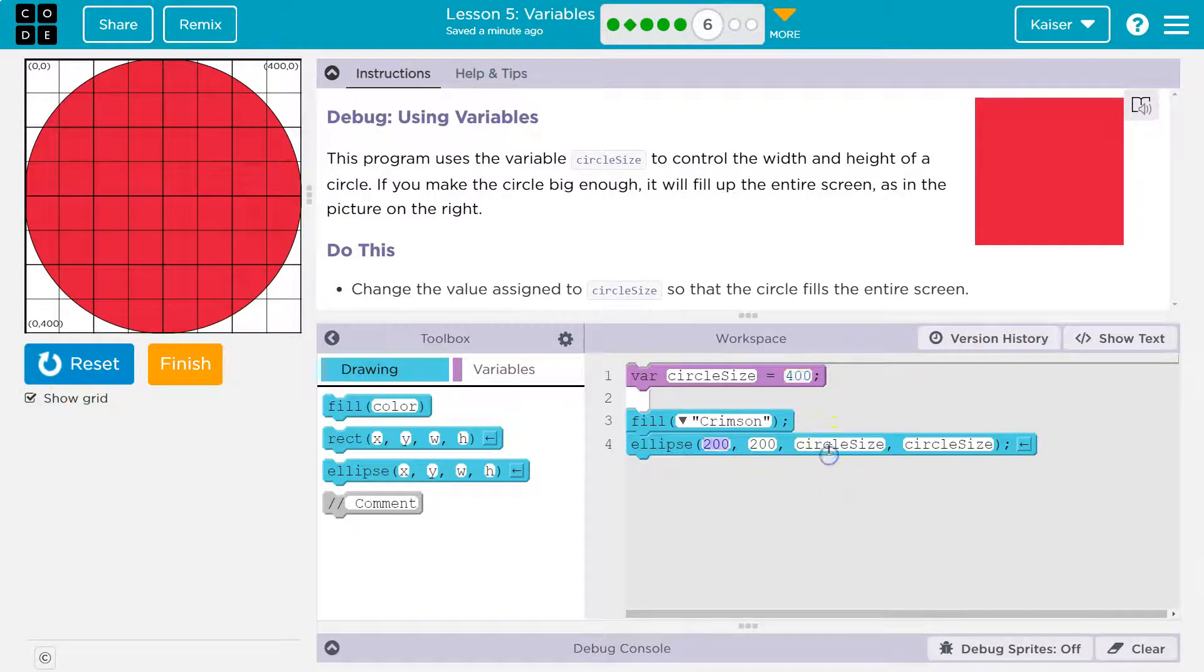Now, then it gets to circle size for the width and the height. And the computer says, what the heck is circle size? Oh, it's this variable. Oh, it's 400. Okay. So width of 400. And look, X starts at zero and it goes to 400. So width of 400 and a height of circle size. Oh, 400, height of 400. Y, the second number starts at zero, goes to second number 400. So it covers the whole screen.